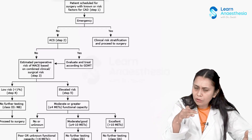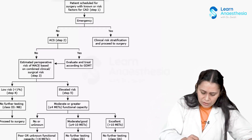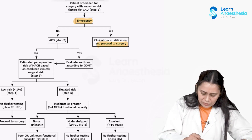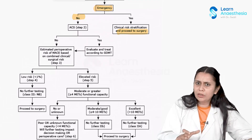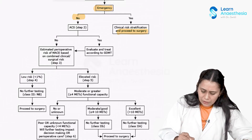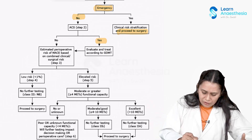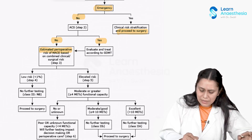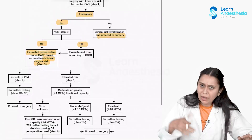When a patient is scheduled for surgery and has known or presumed cardiac disease, if the surgery is emergency surgery, we just stratify the risk and go ahead. Emergency surgery we cannot help. But if it is elective, and if patient has any symptoms of acute coronary syndrome — chest pain or dyspnea — we evaluate and go for goal-directed medical therapy. If patient does not have such symptoms, we estimate the risk of major adverse cardiovascular events based on combined clinical and surgical risk using revised cardiac risk indexes or online risk calculators.